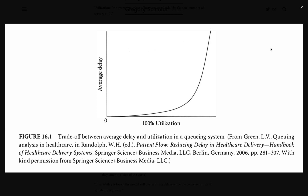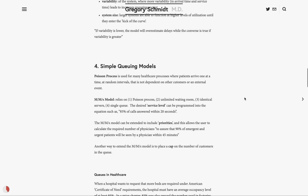It's interesting that in healthcare in America, in order to apply for a certificate of need to expand the number of beds in your hospital, you need to have an average occupancy level of at least 85%. And in prior chapters, it was discussed that in factories, factory owners look to expand their infrastructure when they start to reach around 85%. We'll see exactly why that is important as we move to the section on fixed capacity queues.